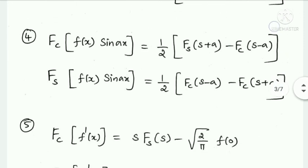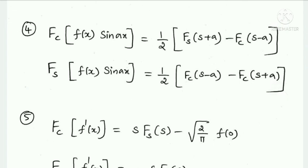The fourth property: Fourier cosine transform of f(x)·sin(ax) equals (1/2) times [Fourier sine transform of (S+a) minus Fourier cosine transform of (S−a)]. The second sub-property: Fourier sine transform of f(x)·sin(ax) equals (1/2) times [Fourier cosine transform of (S−a) minus Fourier cosine transform of (S+a)].